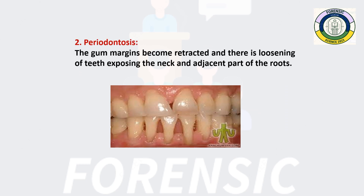The second criterion is Periodontosis. In this, the gum margins become retracted and loosening of teeth occurs, exposing the neck and adjacent part of the root. In this image we can see an open root due to periodontosis.